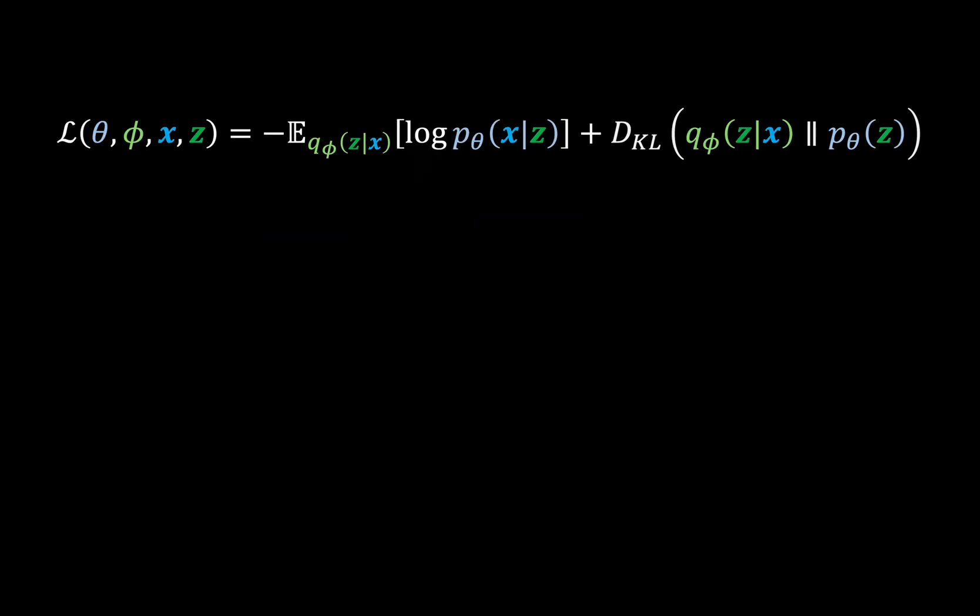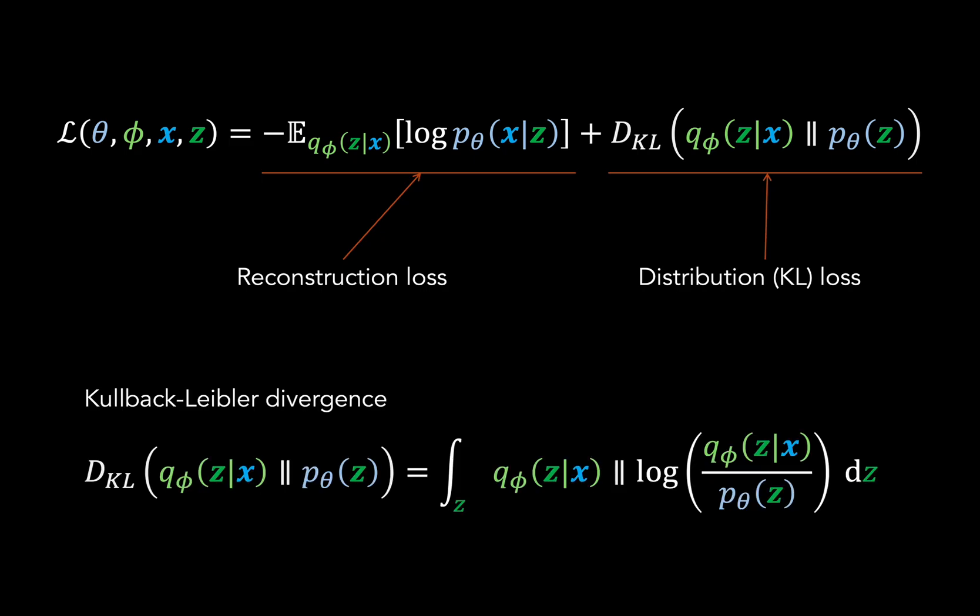Now the model as a whole is trained using a two part loss function. The first part is a reconstruction loss that rewards the decoder based on the log likelihood of the original data. And then we have a distribution or KL divergence loss that penalizes the divergence of the posterior latent distributions from our pre-specified prior distribution.